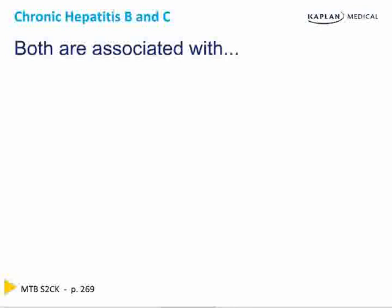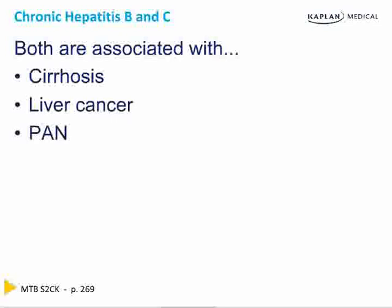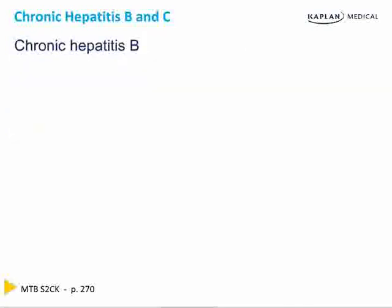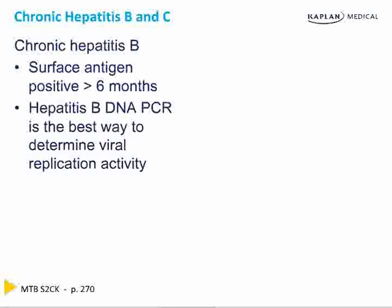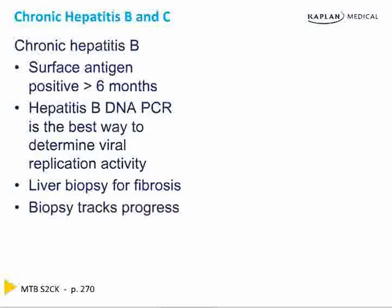Both chronic hepatitis B and hepatitis C are associated with cirrhosis, the development of hepatocellular carcinoma, and polyarteritis nodosa. Chronic hep B patients are those in whom surface antigen is positive for greater than six months. Hepatitis B DNA levels by PCR is the best way to determine viral replication activity. A liver biopsy determines the degree of inflammation and fibrosis, and repeated biopsies track progress.